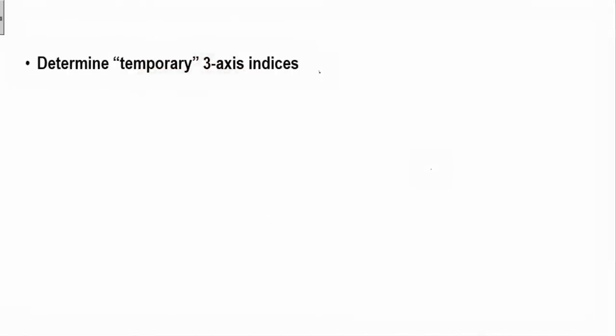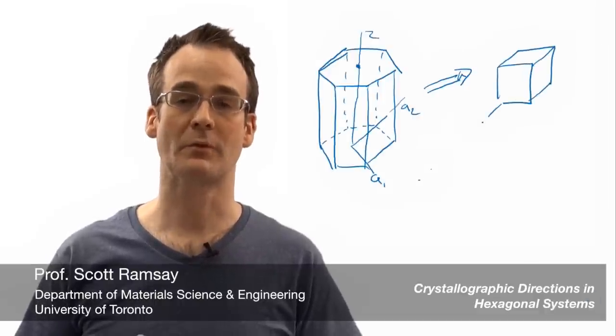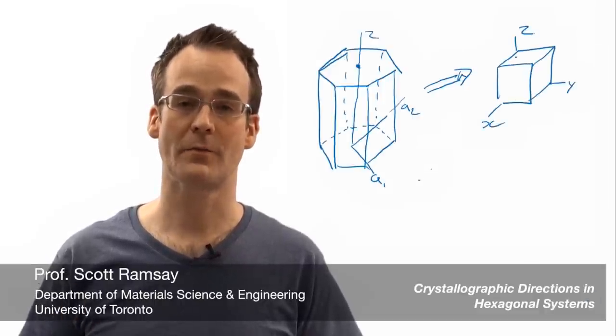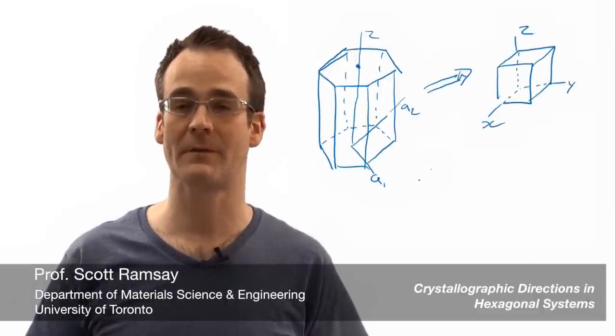So first thing we'll do is talk about a procedure that we're going to follow. First, we're going to pretend that the A1, A2, Z three-axis parallelepiped within the hexagonal unit cell is actually XYZ orthogonal. We're going to sort of imagine that that's where our direction exists, and then we're going to proceed from there and determine the three-index notation for that vector.